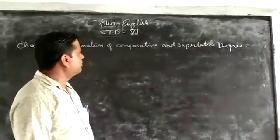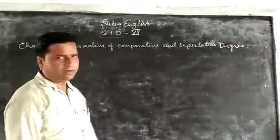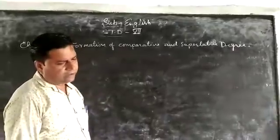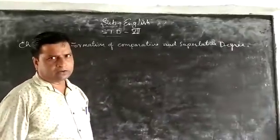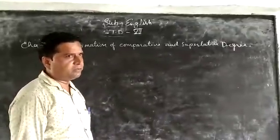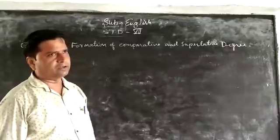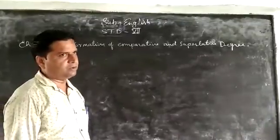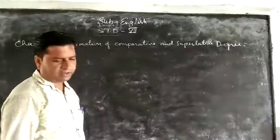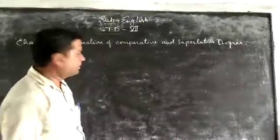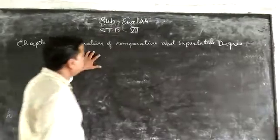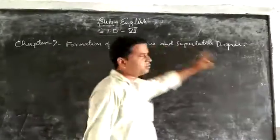In the previous lesson, I have taught you that adverbs are compared by degree, and degrees are of 3 types. You may recall what I taught in the last video. But today I will teach you formation of comparative and superlative.